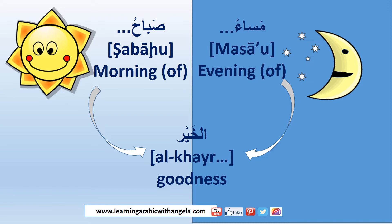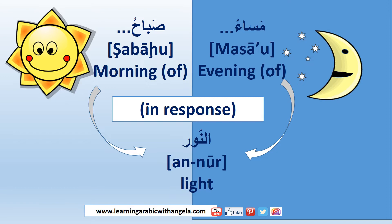Let's review. Masa means evening and sabah means morning. Al-khayr means goodness or abundance. So masa al-khayr means good evening — literally evening of goodness — and sabah al-khayr means good morning — literally morning of goodness. In response to either, you simply add al-noor.